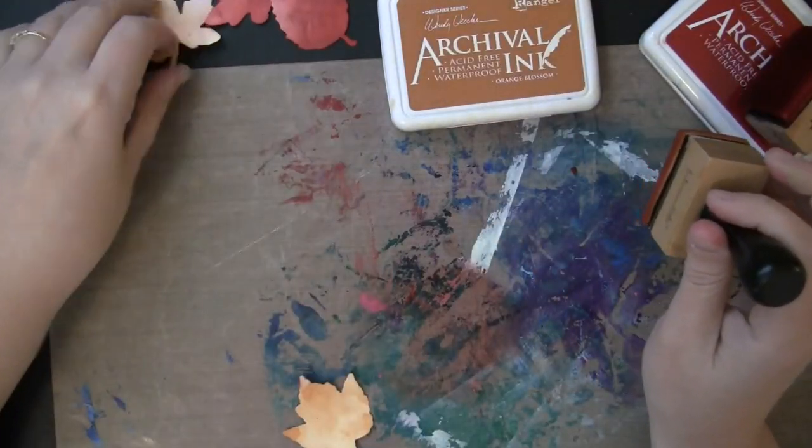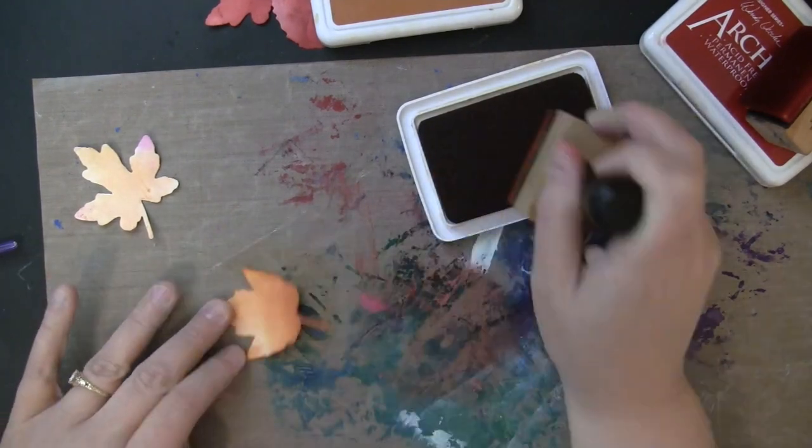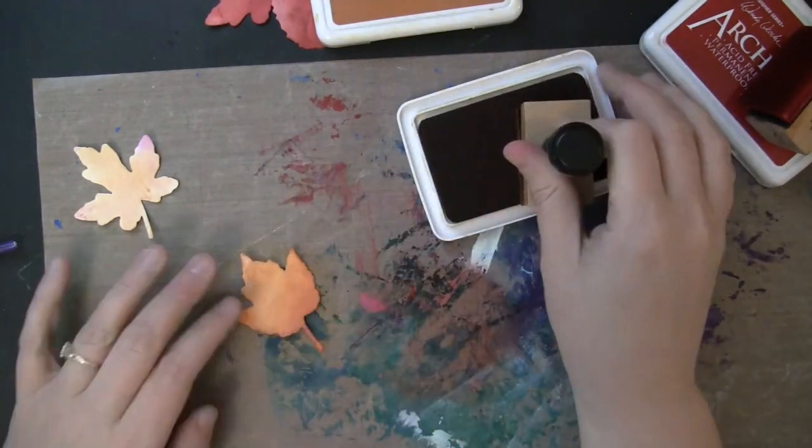And what I love about this is it still has the really pretty textures of having placed the leaves into the paint, but I can adjust the colors here by adding ink on top.